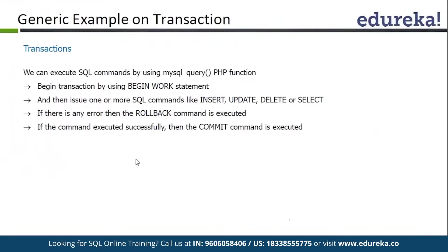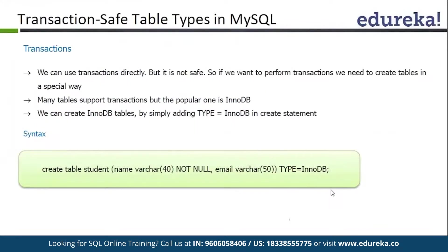Here you can see we can execute SQL commands by using MySQL query. We can use transactions in PHP as well. We can use our MySQL query function to start transactions, commit transactions, or rollback transactions. Basically, the transactions can be executed straightforwardly, but it is always better to use a particular table type — we use InnoDB tables in our case. InnoDB tables are called transaction-safe tables. It means transactions can execute perfectly on these tables and our commit and rollback will work as per the ACID principle.